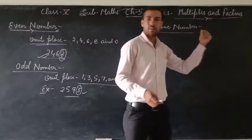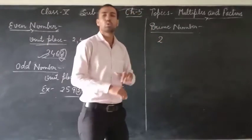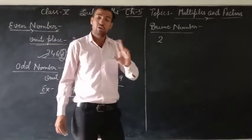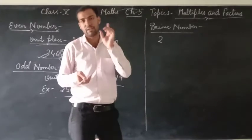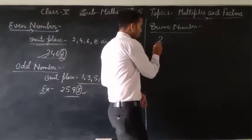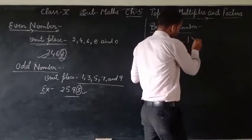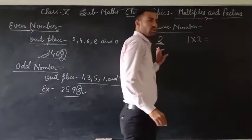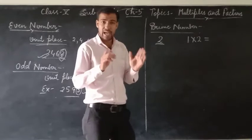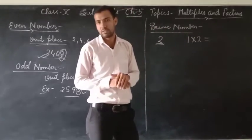That's called a prime number. When our number has exactly 2 factors — 1 and itself — that's called a prime number. For example, 2 is a prime number because 2 has exactly 2 factors: 1 and 2. Note that 1 is a factor of all numbers. So when a number has exactly 2 factors, 1 and itself, it is called a prime number.